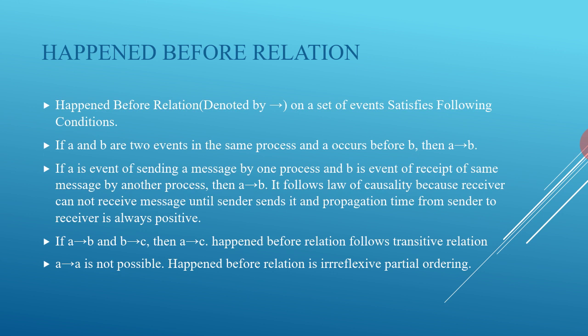This follows the law of causality — propagation time from sender to receiver is always positive. If A happened before B and B happened before C, then A happened before C, so happened-before follows the transitive relation. A happened-before A is not possible; therefore, the happened-before relation is irreflexive, giving us a partial ordering.